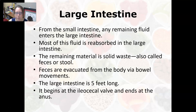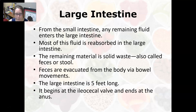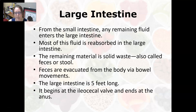From the small intestine, any remaining fluid and undigested food enters the large intestine. Most of this fluid is reabsorbed there — if too much is reabsorbed due to chronic dehydration, it leads to constipation. The remaining material is solid waste, also called feces or stool, evacuated via bowel movements. The large intestine is about five feet long. It also houses gut flora — bacteria that help finish breaking down food, produce compounds beneficial to health, and are part of the feces.